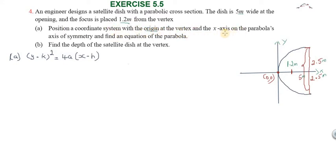X-axis on the parabola's axis of symmetry - this is a rightward-opening parabola. So the equation is (y - k)² = 4a(x - h). This is the cross section: 5 meters on the x-axis, so this is 2.5 meters from the vertex.